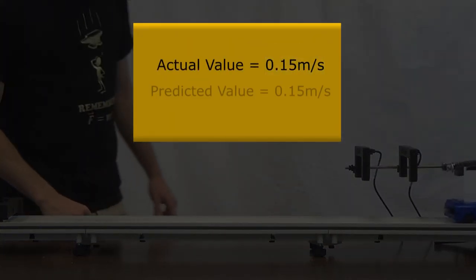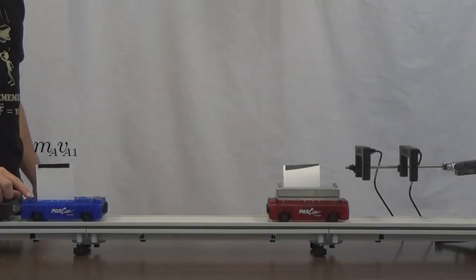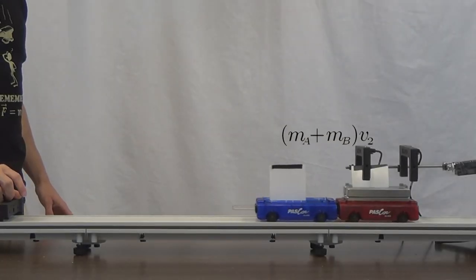As a result, we can see that our predictions are upheld and that velocity does scale with mass in an inelastic collision.